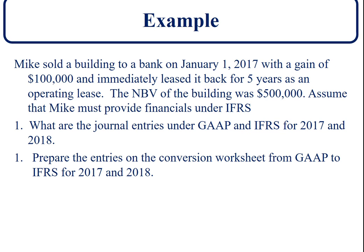The net book value of the building was $500,000, and we're going to assume that Mike must provide financials under the international standard, so he has to convert what he has to the international standard. We're first going to look at what the journal entries would have been under GAAP versus the international standard for 2017 and 2018, and then prepare the entries on the conversion worksheet from GAAP to international standard for the same two years.